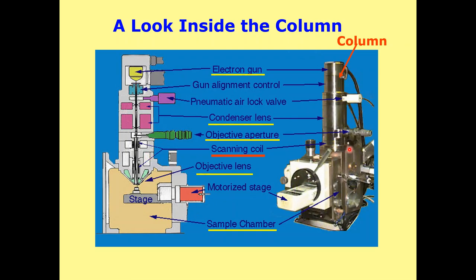Here you can see a comparison of the internal and external parts of a scanning electron microscope. This is called the electron gun, and this is the gun alignment control. We have the airlock wall here, and this portion is the condenser lenses. In this particular lecture we are only discussing different parts — later in coming lectures we will have detailed discussions on what these different parts do in scanning electron microscopy.